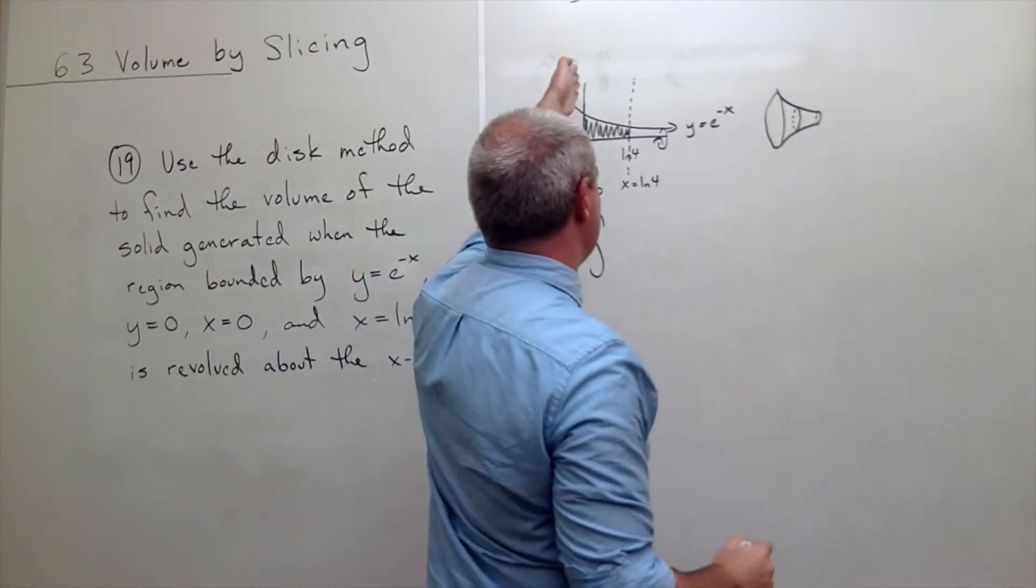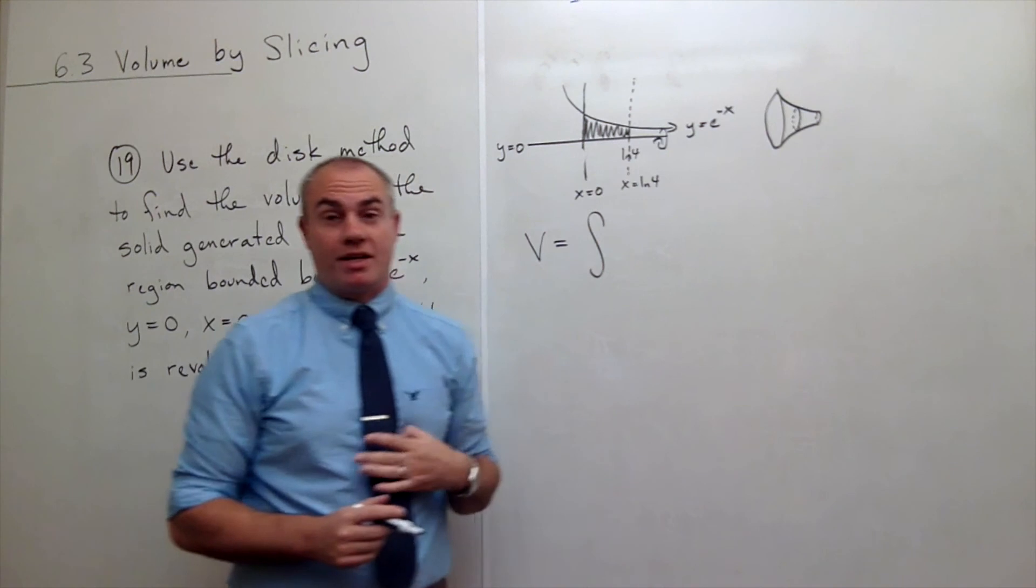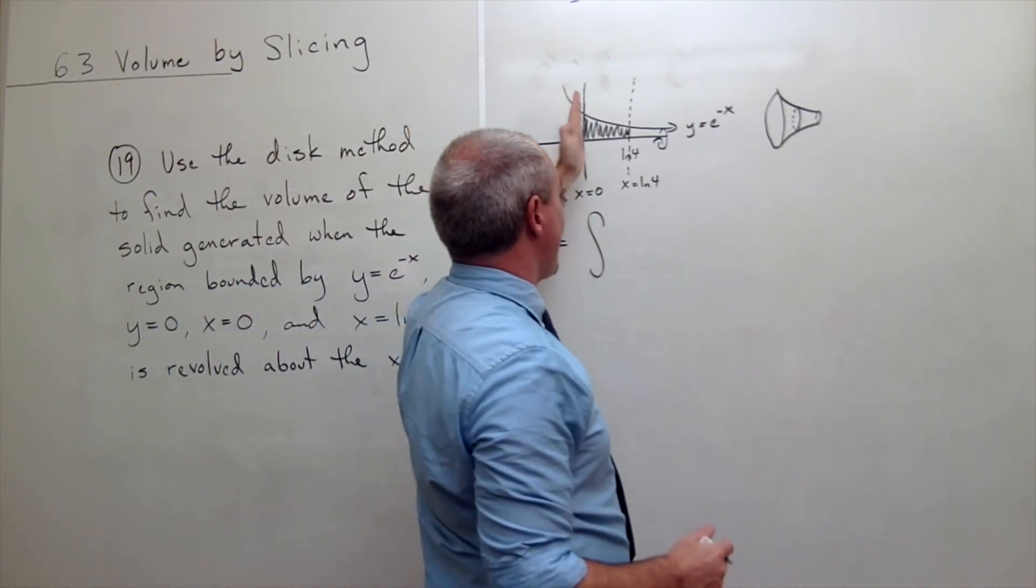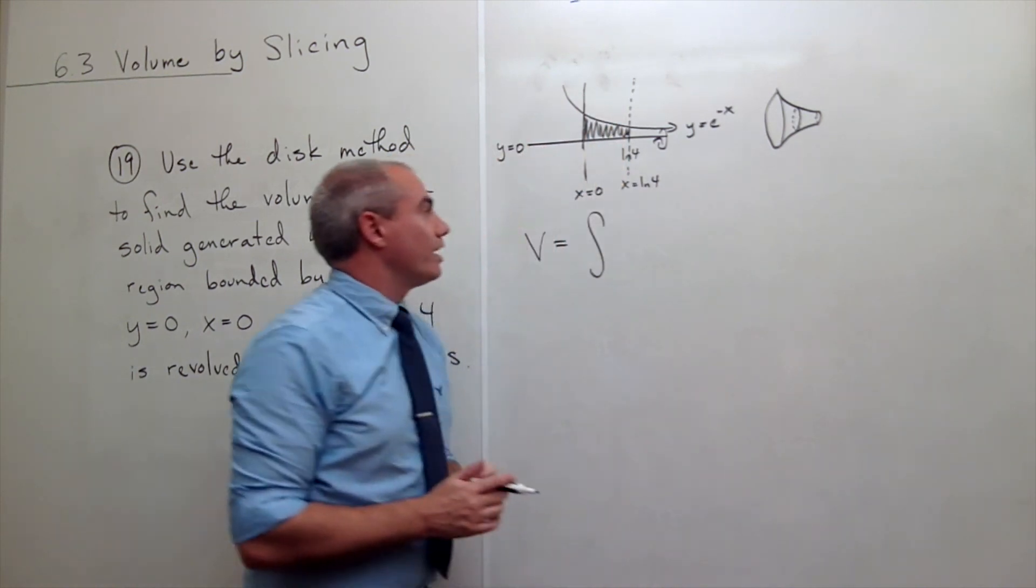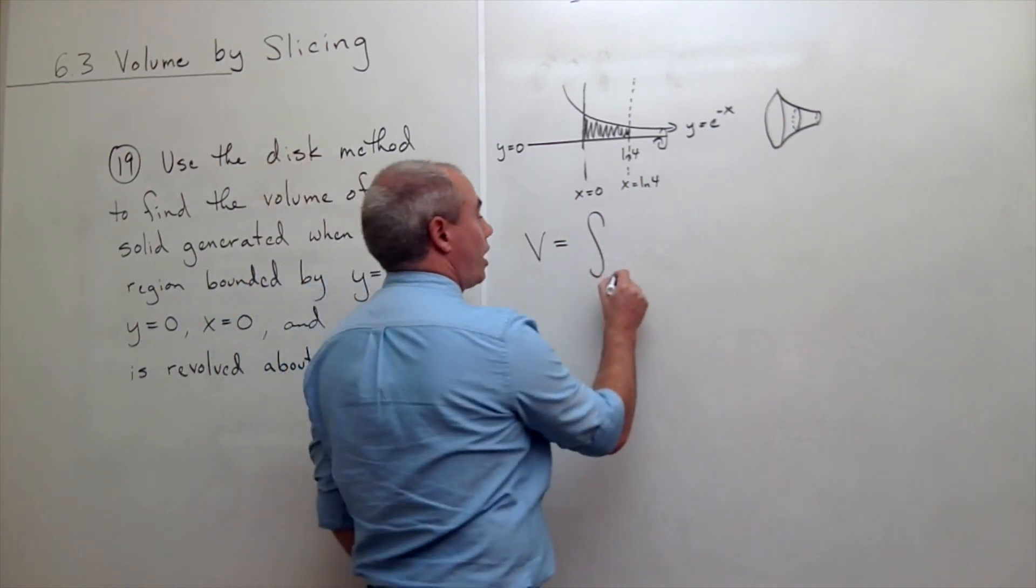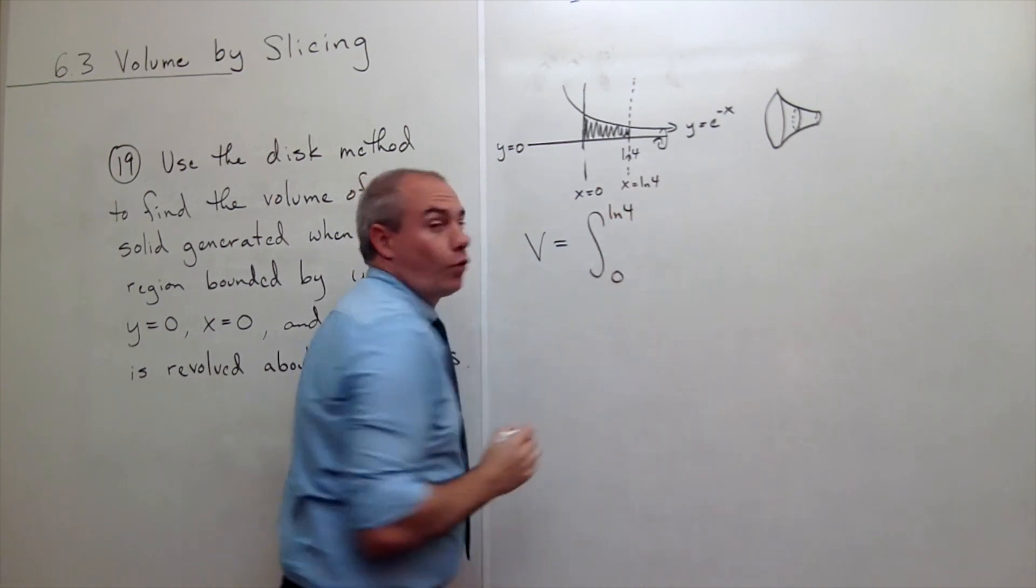Starting at where we start chopping the disks and ending at where we stop chopping disks. Now, I start chopping my disks at x equals 0. And I stop chopping my disks when x is equal to ln of 4. So we want to start chopping at 0, stop chopping at ln of 4.